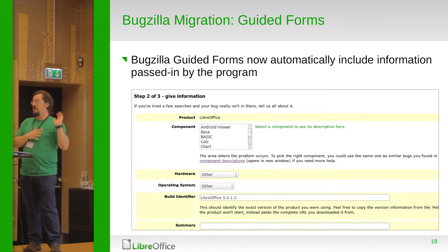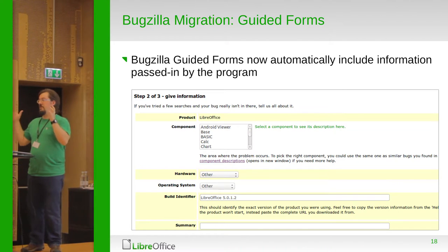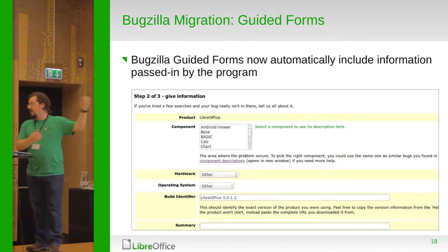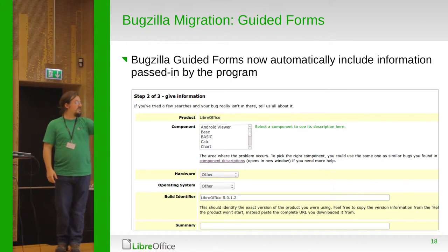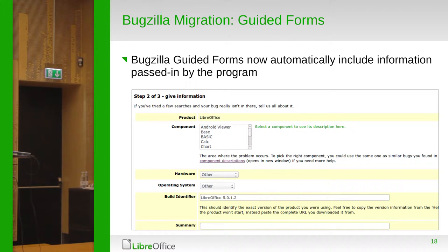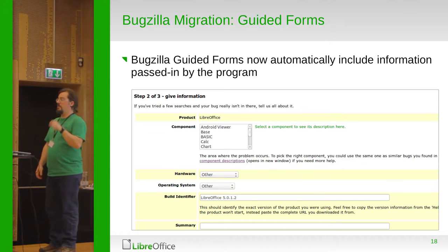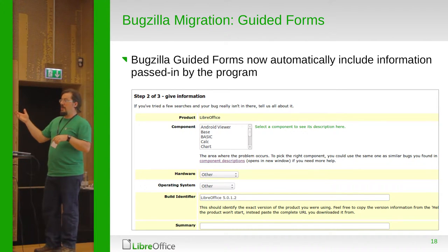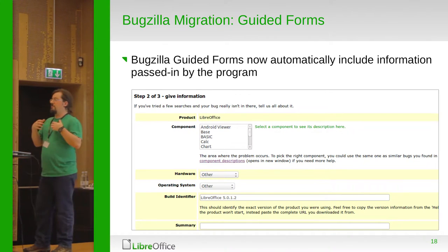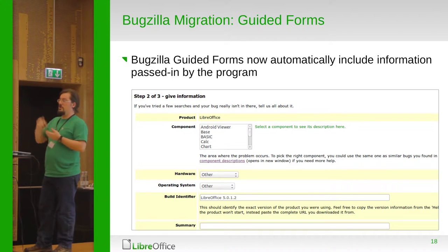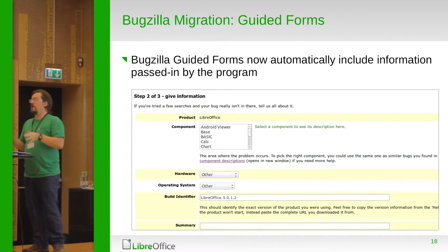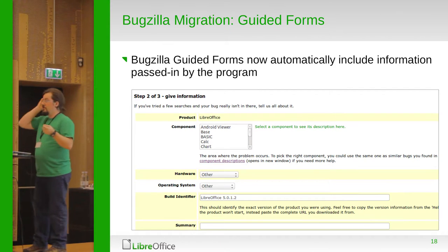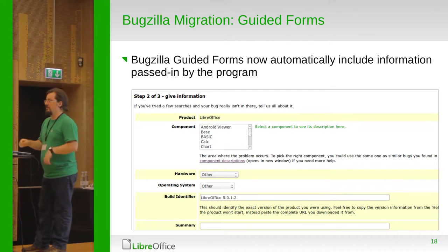We now have an interface — these Bugzilla guided forms — that replaces our old submission assistant. You can see there are helpful hints, such as requiring the exact version of LibreOffice you're running. What's great is that we now have integration with LibreOffice, so if you're running a testing version, you don't have to carefully copy the version number. You can go into the menu, click 'Give Feedback,' and that information will be pasted into your bug report. One of my goals is to include even more information to make it a bulletproof method for users to interact with us.